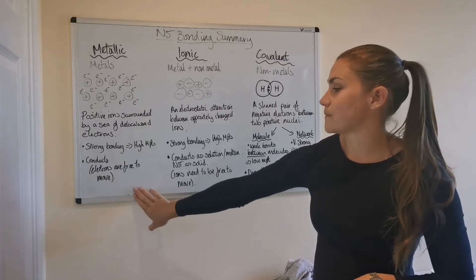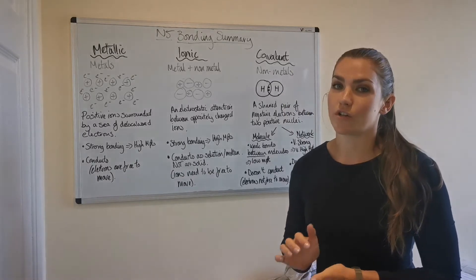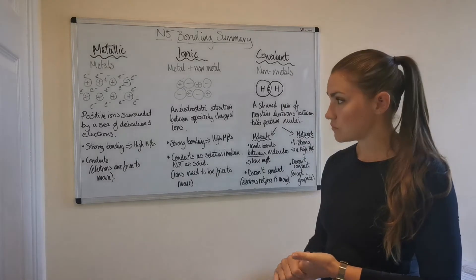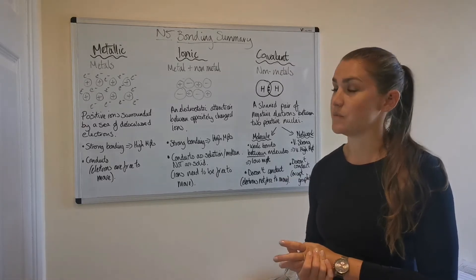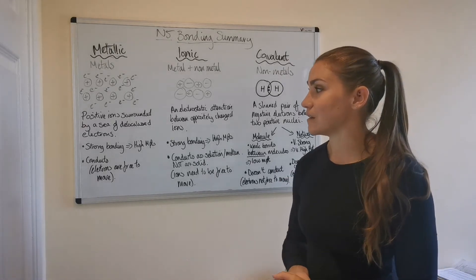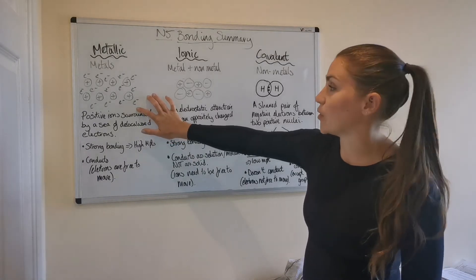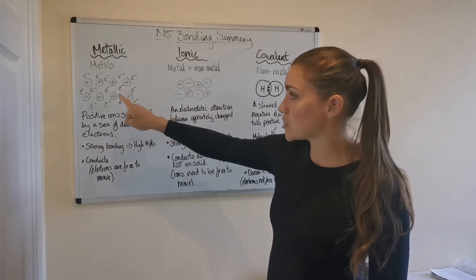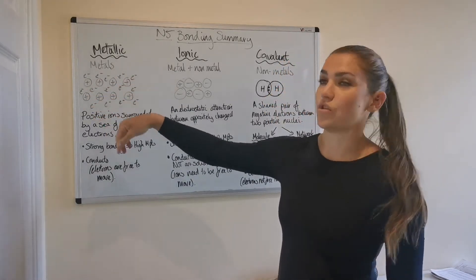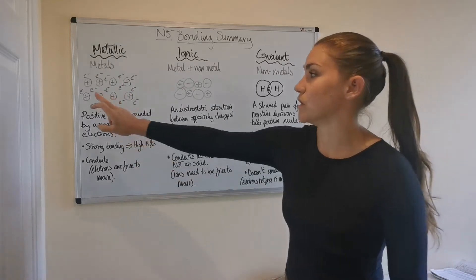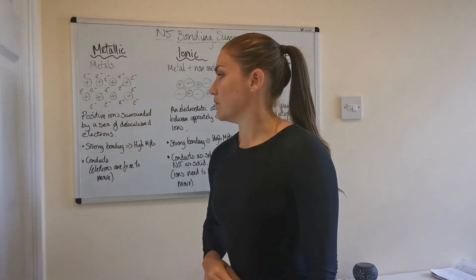Now, the first one, it's probably the easiest one, is metallic. So metallic bonding occurs between metal atoms only. So if you've got a collection of metal atoms, then they will be bonded metallically. And this is the diagram that's usually used to show metallic bonding. So we've got positive ions here with delocalized electrons all around the atoms. So each one of these positive ions is an individual metal atom.